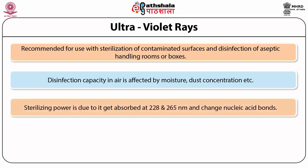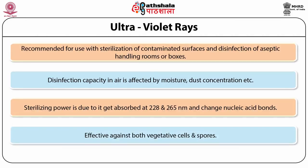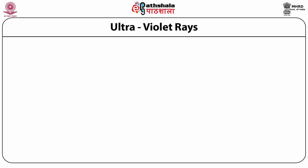Its sterilizing power arises from its capacity to be selectively absorbed at 228 nm and 265 nm wavelengths by the peptide bonds of nucleic acids in the cells of microbial organisms. Both vegetative cells and spores are sensitive to UV radiation. Microbial resistance to UV radiation increases in the order: vegetative bacterial cells < yeast < bacterial spores < mold spores.